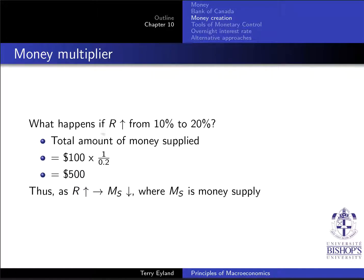What happens if the reserve ratio goes up? Naturally, if you force banks to keep larger reserves, they can't make as many loans, and therefore the amount of money in circulation would go down.